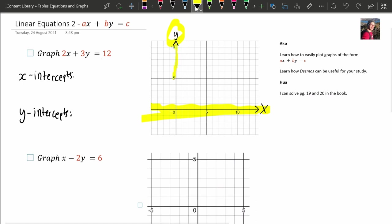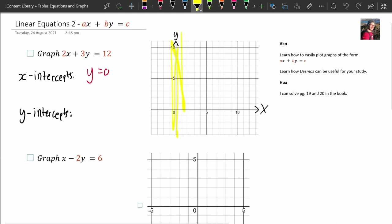That's precisely when Y is 10, 9, 8, 7, 6. When Y is 0. When Y is 0, you will have your X intercept. So Y is 0. And analogous argument for the Y intercept. This one is when X is 0.